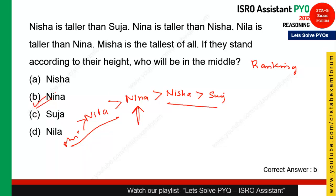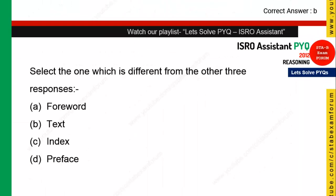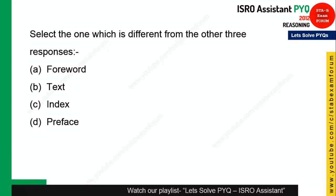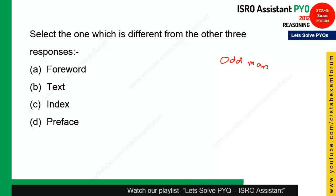The next question is again from odd man out. Option B — 'text' — is the correct answer because forward, index, and preface are generally found in either the front or back section of any textbook, whereas the text itself is in the middle.